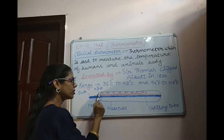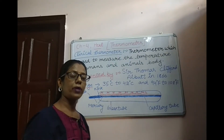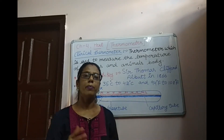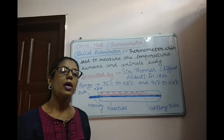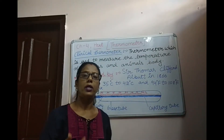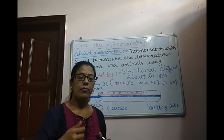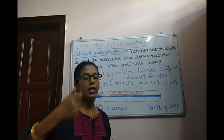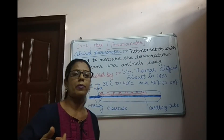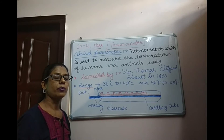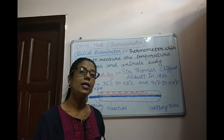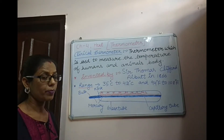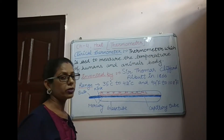Above the bulb, you can see there is a kink. The role of the kink in the Clinical Thermometer is very important: when we measure the temperature and then take the thermometer out from the mouth or underarms, the kink prevents the mercury from falling back from its level. So we give the thermometer a jerk to reset the mercury reading.